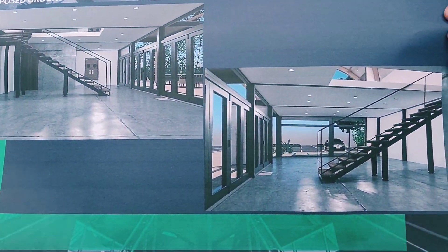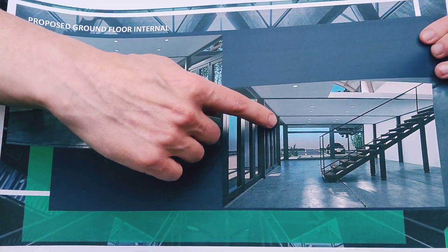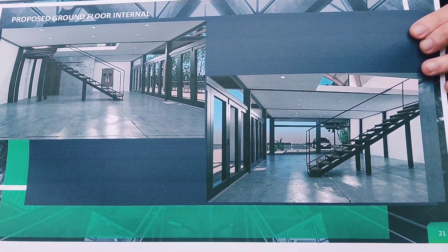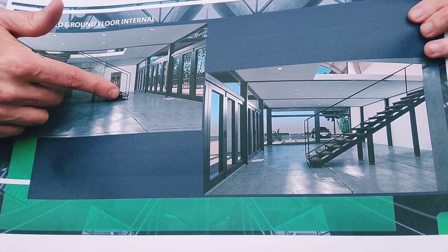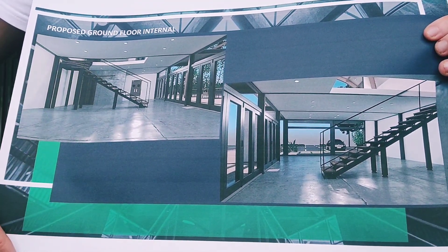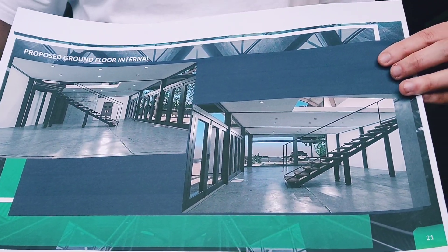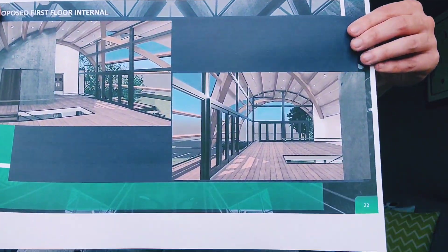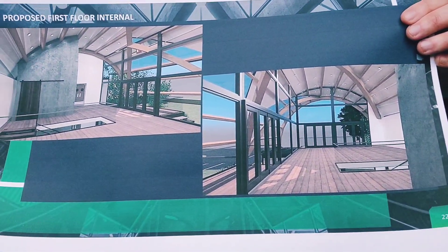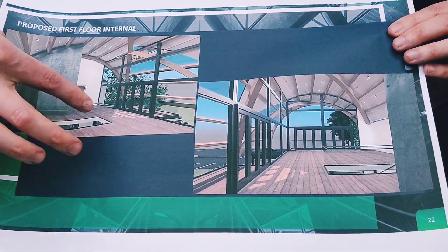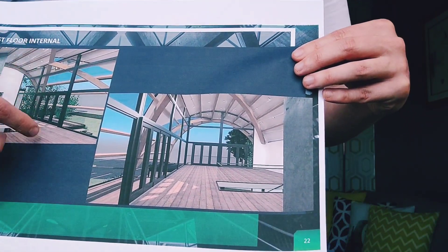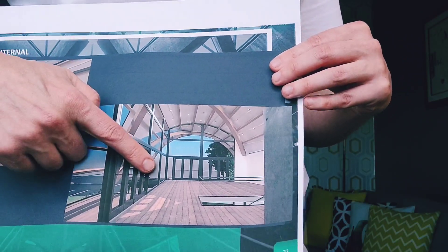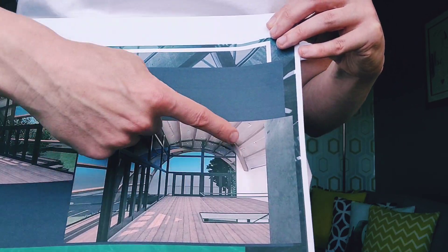These are visuals of the interior. The ground floor is shown from two different angles, featuring a polished concrete floor and an industrial style staircase. The first floor interior shows the stairs coming up, a glazed balustrade, polished concrete, timber floors, bifold doors and exposed beam work.